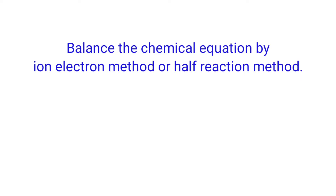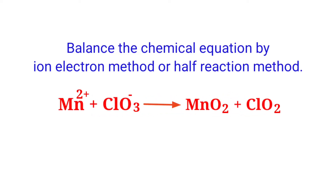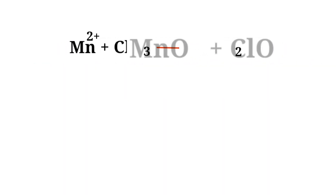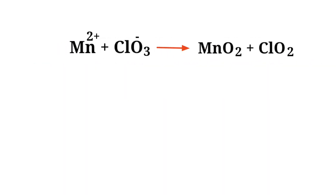Balance the chemical equation by the Ion Electron Method, also called the Half Reaction Method. The equation is: Manganese Ion plus Chlorate Anion gives Manganese Dioxide plus Chlorine Dioxide. First, figure out the reducing and oxidizing agents using the rules of assigning oxidation numbers. In the Ion Electron Method, one reaction is divided into two half reactions, which are balanced separately and then added together.